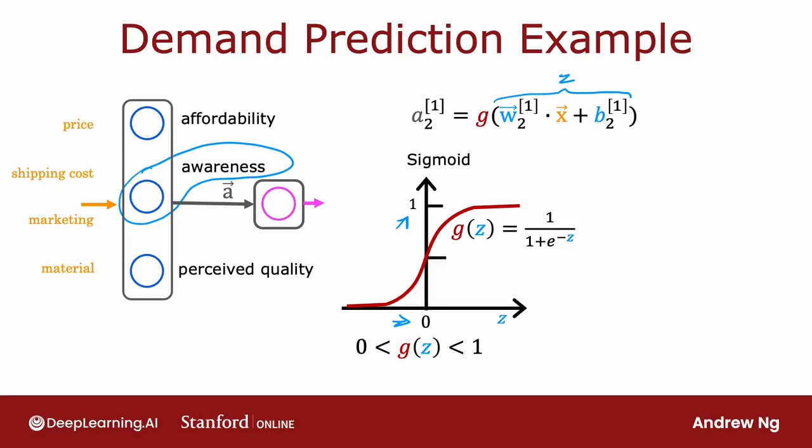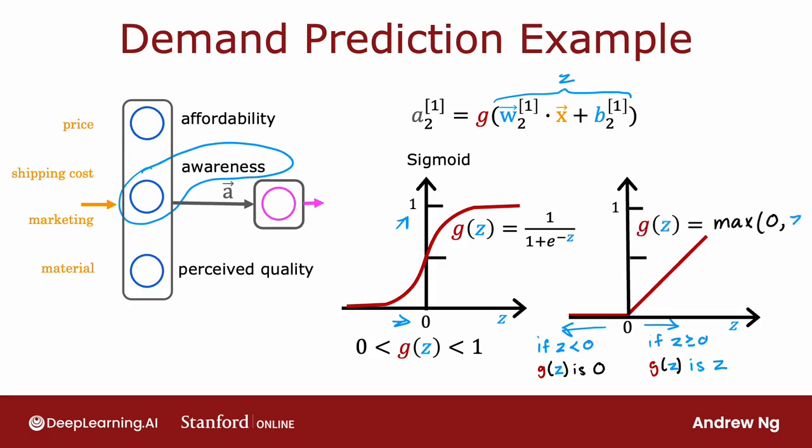It turns out that a very common choice of activation function in neural networks is this function. It looks like this, if z is this, then g(z) is zero to the left, and then it's this straight line, 45 degrees to the right of zero. And so when z is greater than or equal to zero, g(z) is just equal to z, that is to the right half of this diagram. And the mathematical equation for this is g(z) equals max of zero comma z. Feel free to verify for yourself that max of zero comma z results in this curve that I've drawn over here. And if a_2^[1] is g(z) for this value of z, then the activation value can now take on zero or any non-negative value.